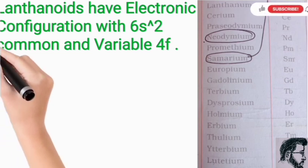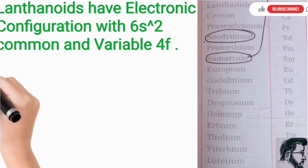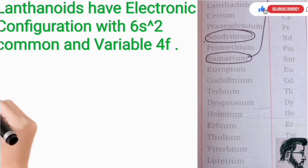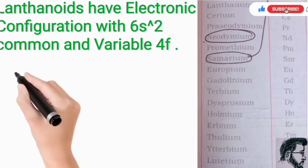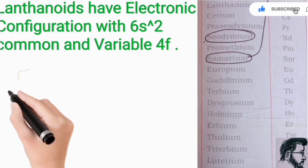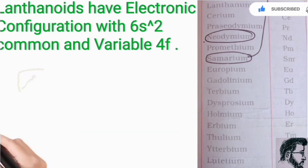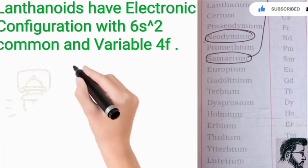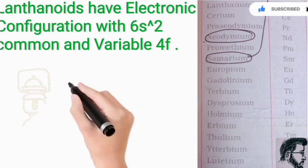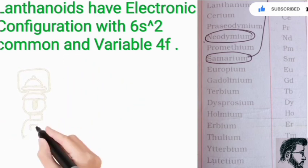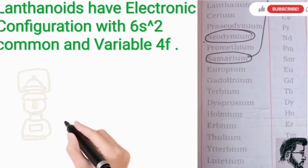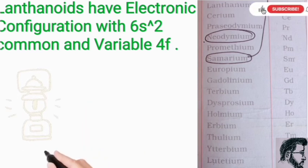The members that fall in the lanthanoid series are: lanthanum, cerium, praseodymium, neodymium, promethium, samarium, europium, gadolinium, terbium, dysprosium, holmium, erbium, thulium, ytterbium, and lutetium.